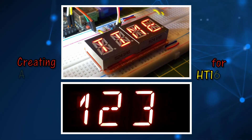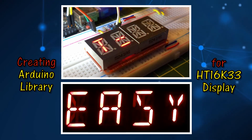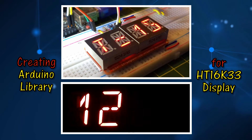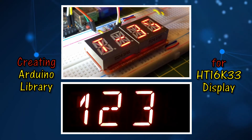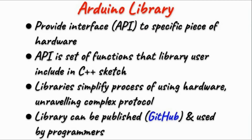This video shows how to create an Arduino library for the HD16K33 4-digit 14-segment display. Within the Arduino environment, a library provides the interface to a specific piece of hardware. This interface is called API — Application Programmer Interface. API is a set of functions that the library user includes in the C++ sketch.